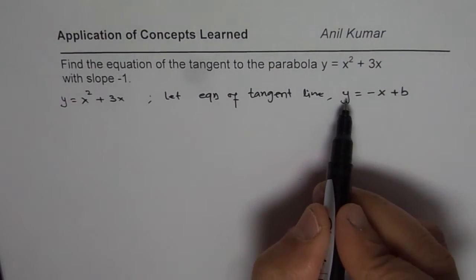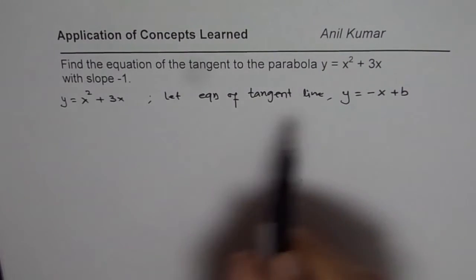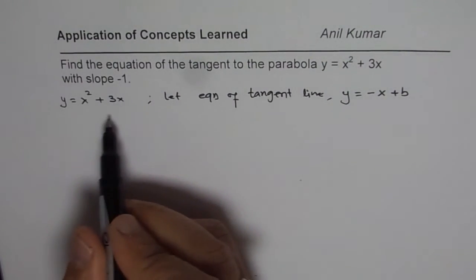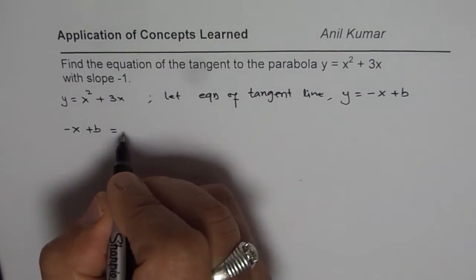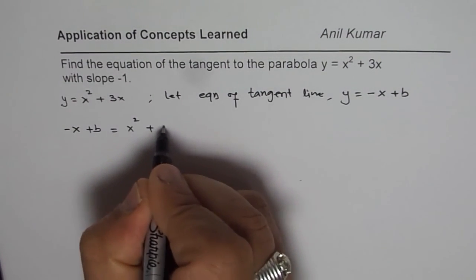So, what we will do is we will replace y with minus x plus b in this equation. And then solve the two equations. So, what we have here is minus x plus b equals to x square plus 3x.